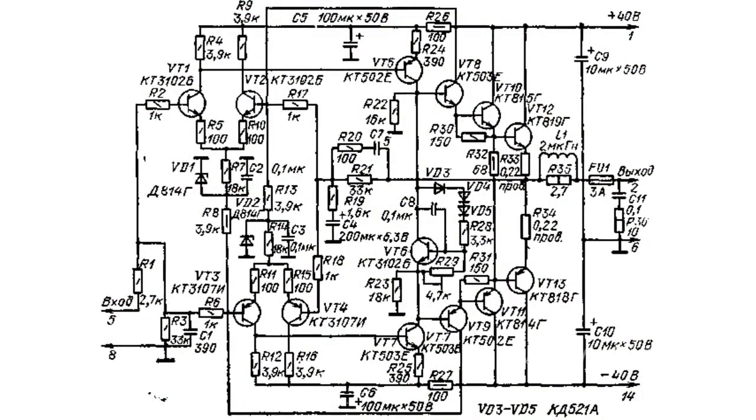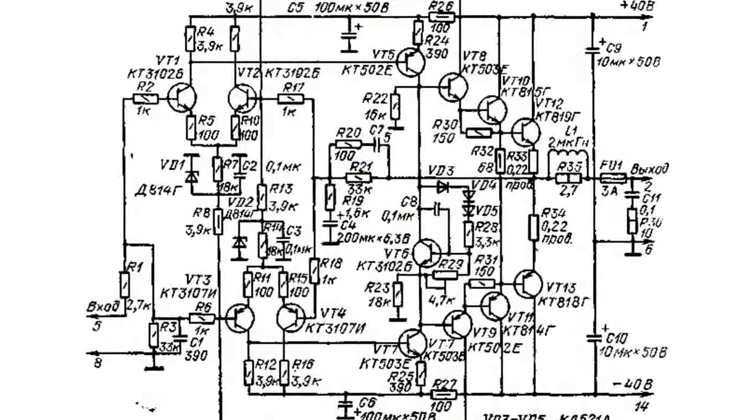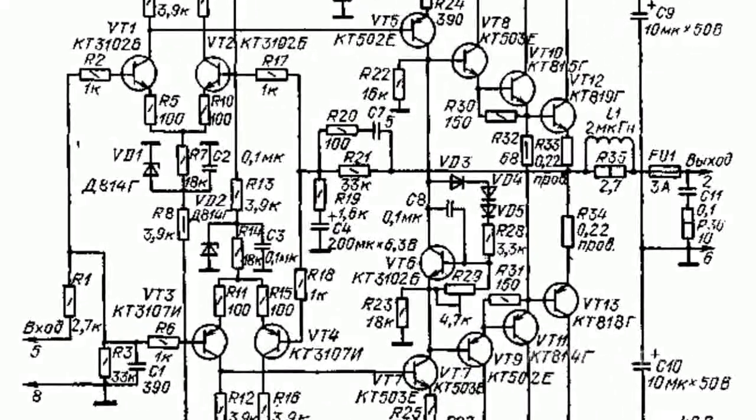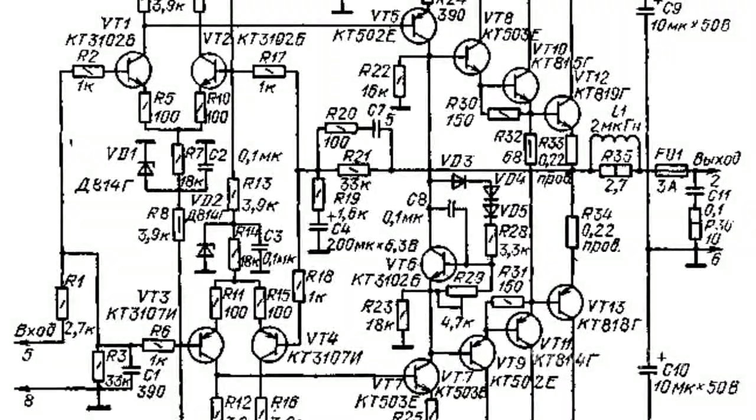A differential amplifier is a circuit designed to amplify the difference between voltages of two input signals. The output signal doesn't depend on the level of each input signal — it is determined by that difference.